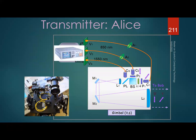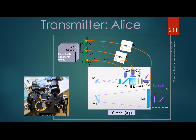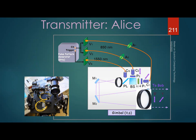A pulse pattern generator with about 2 ps RMS jitter prepares pseudorandom sequences that drive three lasers — two VCSELs (vertical-cavity surface-emitting lasers) operating at 850 nm for the B92 QKD protocol, and another for synchronization. VCSELs are very compact and can operate at very high frequencies. Optical fiber ensures transmission of a single spatial mode — preventing mode-profile attacks — and pulses are attenuated to less than one photon per pulse, then collimated, polarized, combined, and launched through a telescope with a beam diameter of about 4 cm.